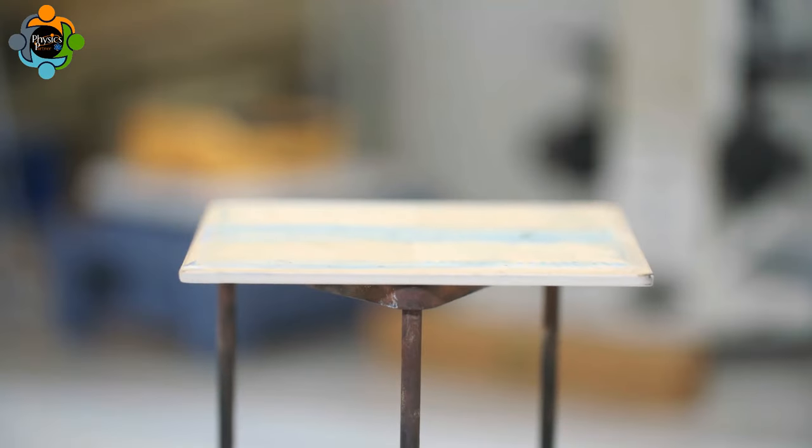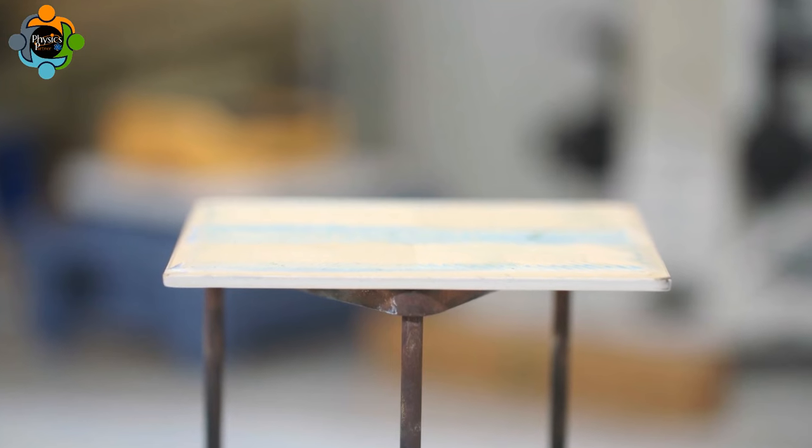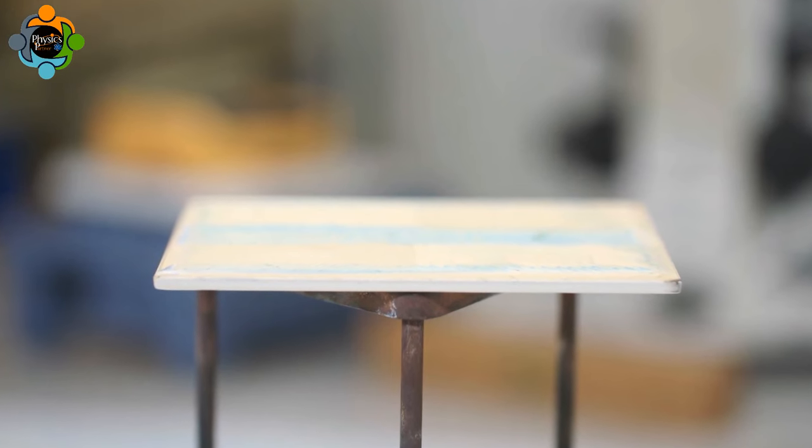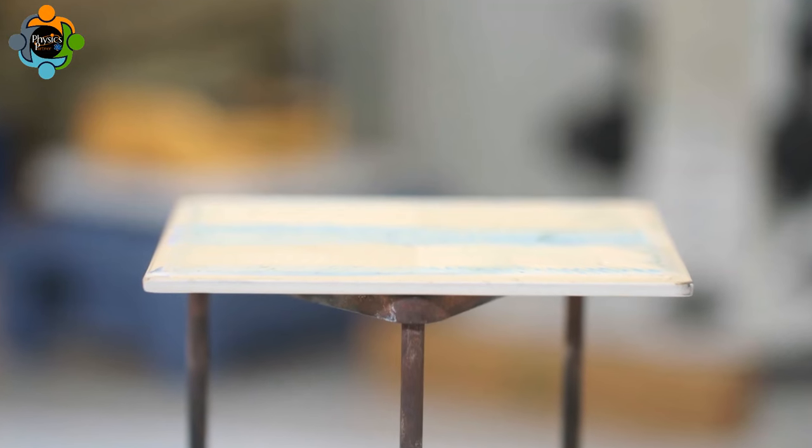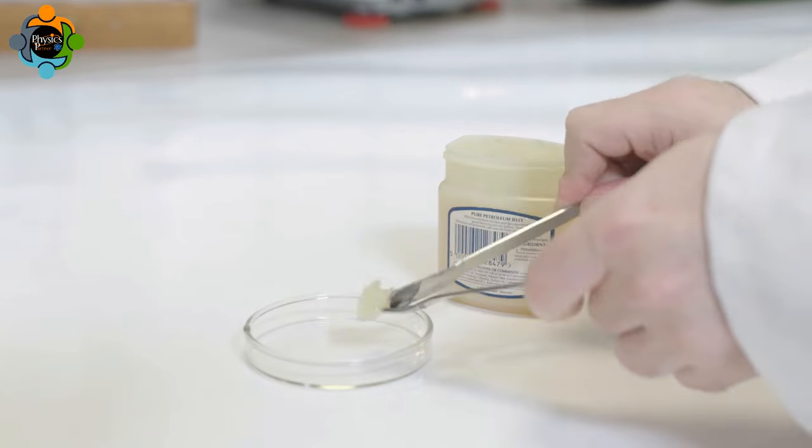The equipment is set up by placing the heat resistant plate on the tripod. The heat resistant plate acts as an insulator and a barrier between the metal rods and the tripod. Some petroleum jelly is transferred to a dish.